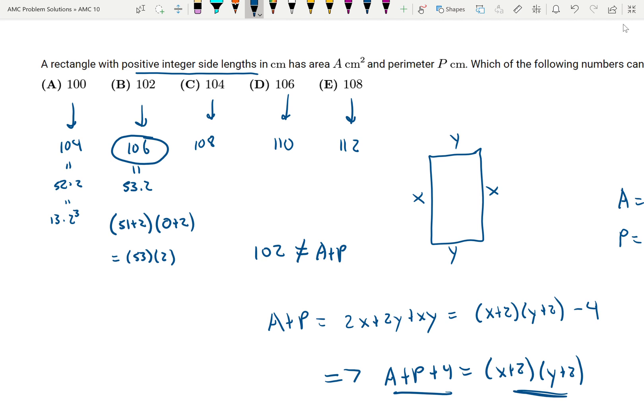And if you do out these other ones, you'll see that we are able to factor these three. Their prime factorizations aren't just two prime numbers, so the answer is choice B, 102.